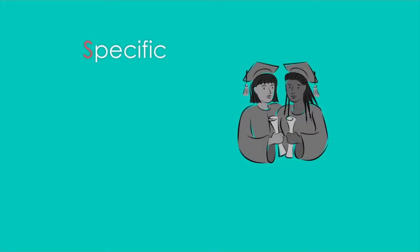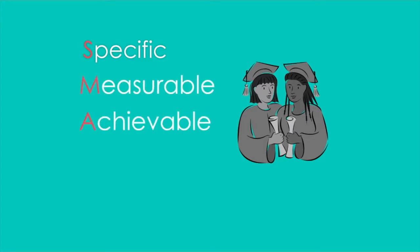Just to review: goals have got to be specific, measurable, achievable, and realistic. Achievable means the goal allows you to break steps down into an action plan. If you have a goal that doesn't give you the ability to do that, it's not going to be an achievable goal.